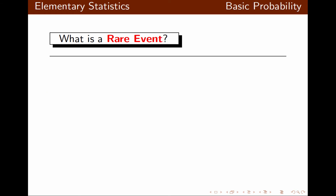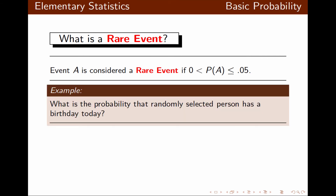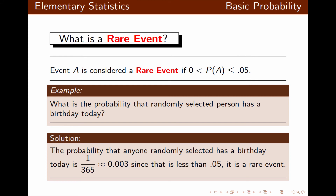What is a rare event? Event A is considered a rare event if the probability of A is between 0 and less than or equal to 0.05. For example, what's the probability that a randomly selected person has a birthday today? Today is only one day out of 365 days, so the probability is 1 over 365, which is approximately 0.003. Since this is less than 0.05, it is considered a rare event.